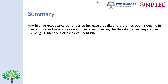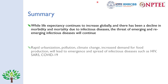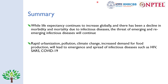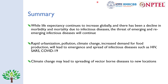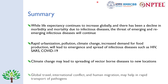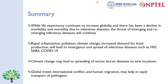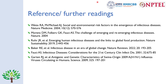To summarize, while life expectancy continues to increase globally and there has been a substantial decline in morbidity and mortality due to infectious diseases, the threat of emerging and re-emerging infectious diseases will continue. Rapid urbanization, pollution, climate change, and increased demand for food production will lead to emergence and spread of diseases such as HIV, SARS, and COVID-19. Climate change may spread vector-borne diseases like dengue, chikungunya, and malaria to new locations, and global travel, international conflict, and human migration may facilitate rapid transport of emerging and re-emerging pathogens. These references contain useful information regarding factors associated with emerging and re-emerging diseases.